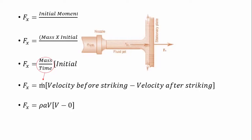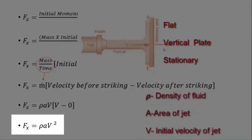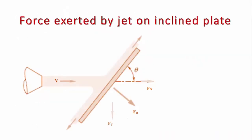Finally, the force exerted by the jet on a flat stationary plate is equal to rho a v squared. In the next video, we will be discussing the same thing in an inclined plate. Thank you.